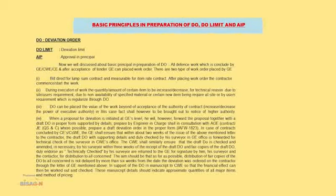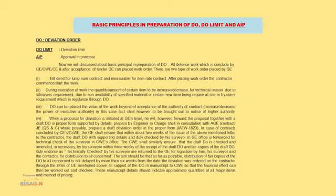After placing the work order, the contractor commences the work. During execution of work, the quantity or amount of certain items may need to be increased or decreased for technical reasons, due to site or user requirements, due to non-availability of specific material, or certain new items being required at site — which is regularly addressed through a DO.